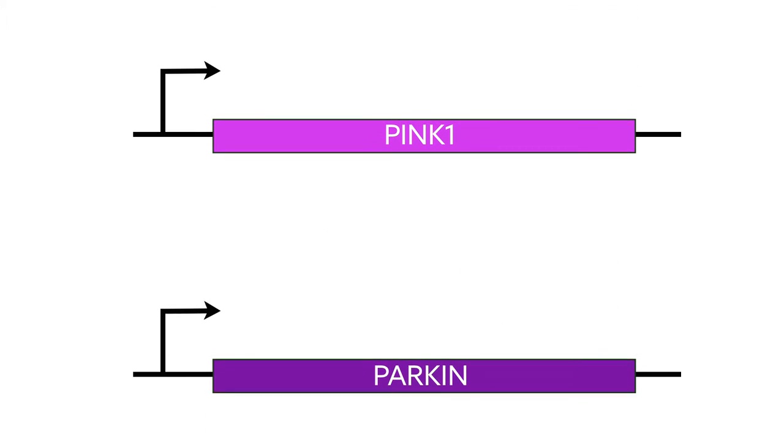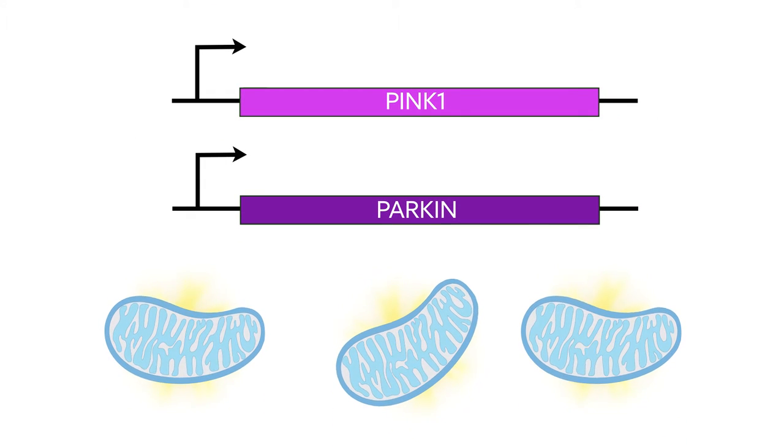Some forms of Parkinson's are caused by mutations in the genes PINK1 and PARKIN, which are instrumental in mitochondrial quality control.